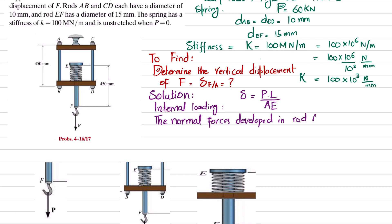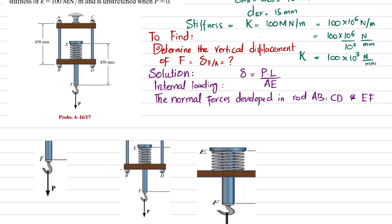We need to find the normal forces developed in rods AB, CD, and EF. To do that, we will cut the beam. For the first cut through rod EF: when you cut it, there is a force P acting downward. To keep equilibrium, the force P_EF will be equal in magnitude but opposite in direction, so P_EF = 60 kilonewtons.